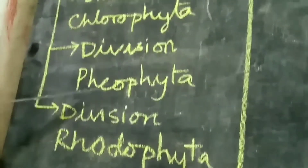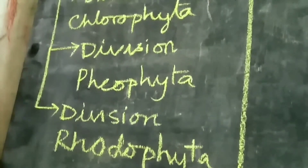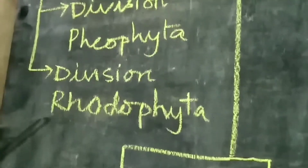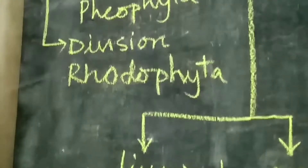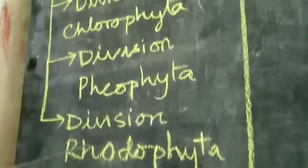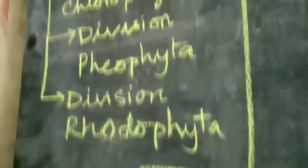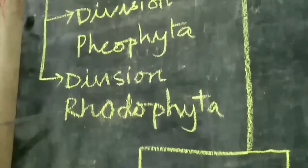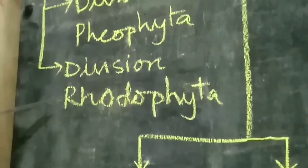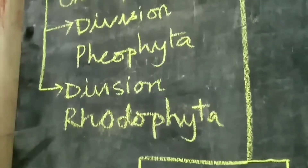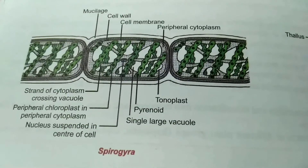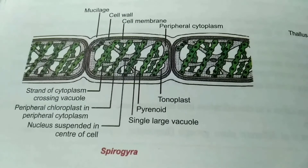Macrocystis are commonly called kelp. Next division is Rhodophyta. Members of this group are called red algae because the photosynthetic pigments are chlorophyll A and D, and they possess red-colored photosynthetic pigments such as r-phycoerythrin and r-phycocyanin. Their examples are Porphyra and Gelidium.